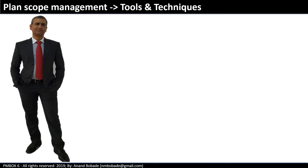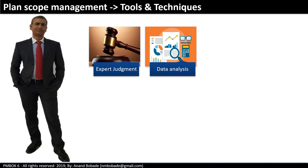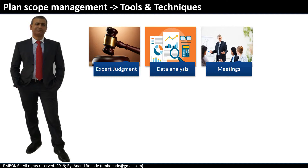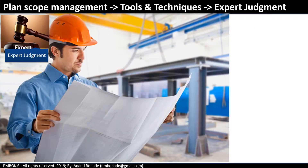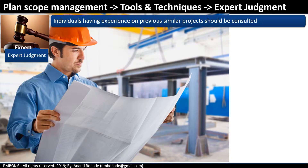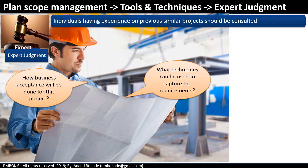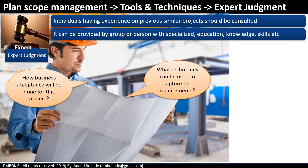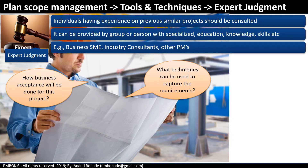The tools and techniques used in plan scope management are expert judgment, data analysis, and meetings — common across most planning processes. Expert judgment: individuals with experience on previous similar projects should be consulted. For example, an SME previously involved in an ERP project can help the project manager plan the scope. The SME may explain what techniques can be used to capture requirements and how business acceptance will be done. Expert judgment can be provided by business SMEs, industry consultants, or other project managers.